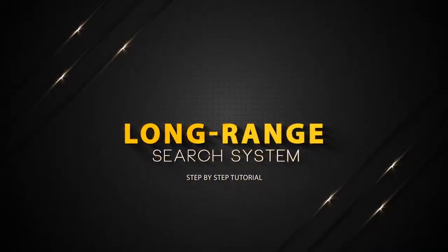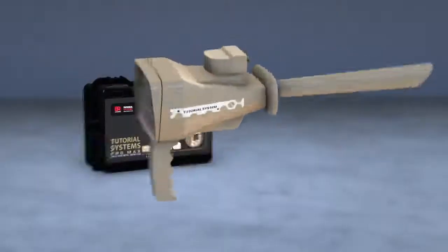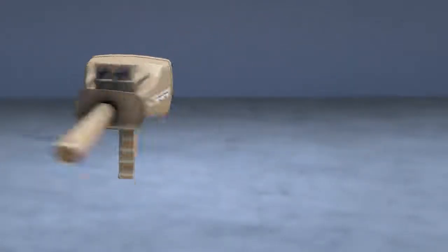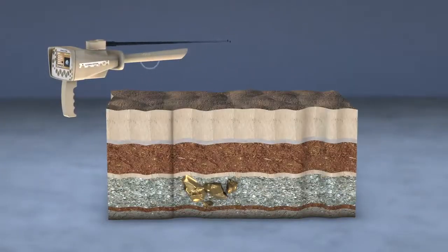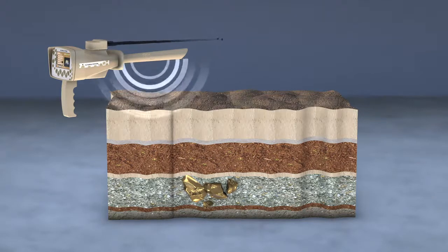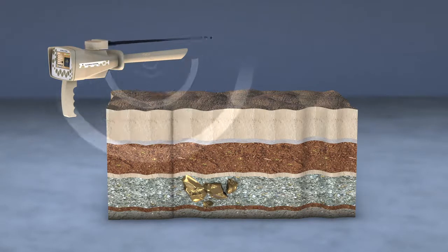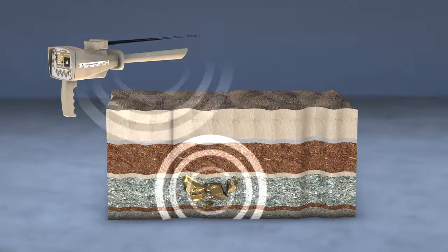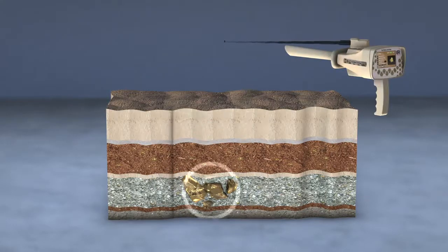Long Range System. This system stimulates the static electric field of a specific target within the search field if it exists, then the moving antennas begin to automatically gravitate towards those signals returned from the target.